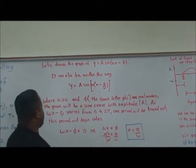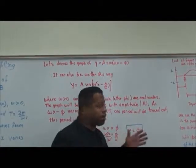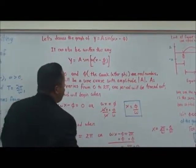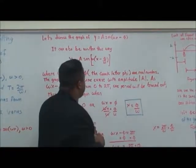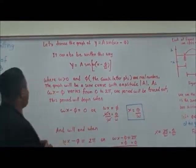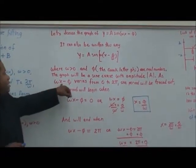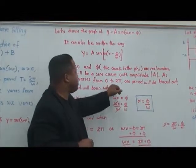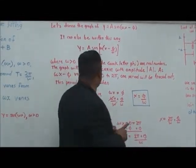Where ω is greater than zero and φ is a real number, the graph will be the sine curve with amplitude equal to the absolute value of A, as ωx minus φ varies from 0 to 2π, and one period will be traced out.